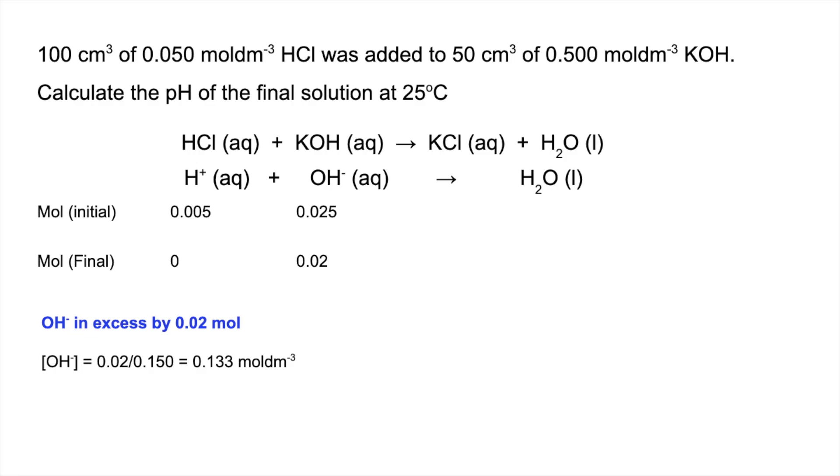We need to use KW, and at 25 degrees C, KW has a value of 1×10⁻¹⁴, because ultimately we need the H+ concentration to then minus log for the pH. So H+ concentration is KW divided by OH- ion concentration, so that gives us an H+ concentration of 7.5×10⁻¹⁴. Now we minus log and we get 13.12 to two decimal places.